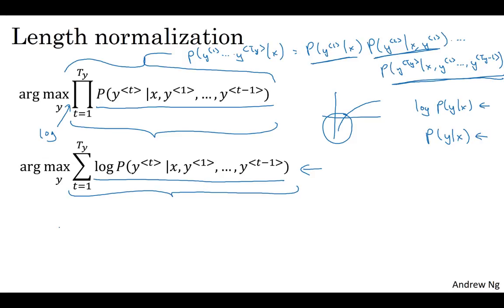So there's one other change to the algorithm that makes it work better, which is instead of using this as the objective you're trying to maximize, one thing you could do is normalize this by the number of words in your translation. And so this takes the average of the log of the probability of each word. And this significantly reduces the penalty for outputting longer translations. And in practice, as a heuristic, instead of dividing by Ty, the number of words in the output sentence—